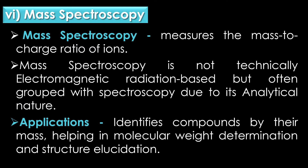The sixth type is mass spectroscopy. Mass spectroscopy measures the mass-to-charge ratio of ions. It is not technically electromagnetic radiation based, but is often grouped with spectroscopy due to its analytical nature. Mass spectroscopy identifies compounds by their mass, helping in molecular weight determination and structural elucidation.